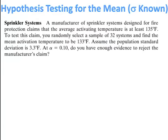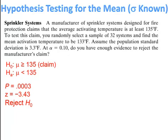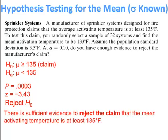Final pause-and-try: Make sure the correct tail is highlighted in the calculator. The p-value is .003 (note: if the calculator shows scientific notation like 'e−4', move the decimal left that many places). The test statistic is −3.43. We reject the null hypothesis. Since the claim is on the null, there is significant evidence to reject the claim that the activating temperature is at least 135 degrees Fahrenheit.